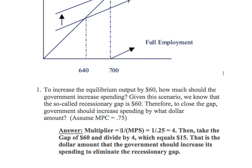The multiplier for the economy is given by the reciprocal of MPS: 1 divided by MPS. Our MPS is 0.25, since 0.75 plus 0.25 equals 1. So 1 divided by 0.25 gives us a multiplier of 4. The full impact on the economy for every $1 spent will be a total increase of 4 — that's the multiplier effect on GDP.